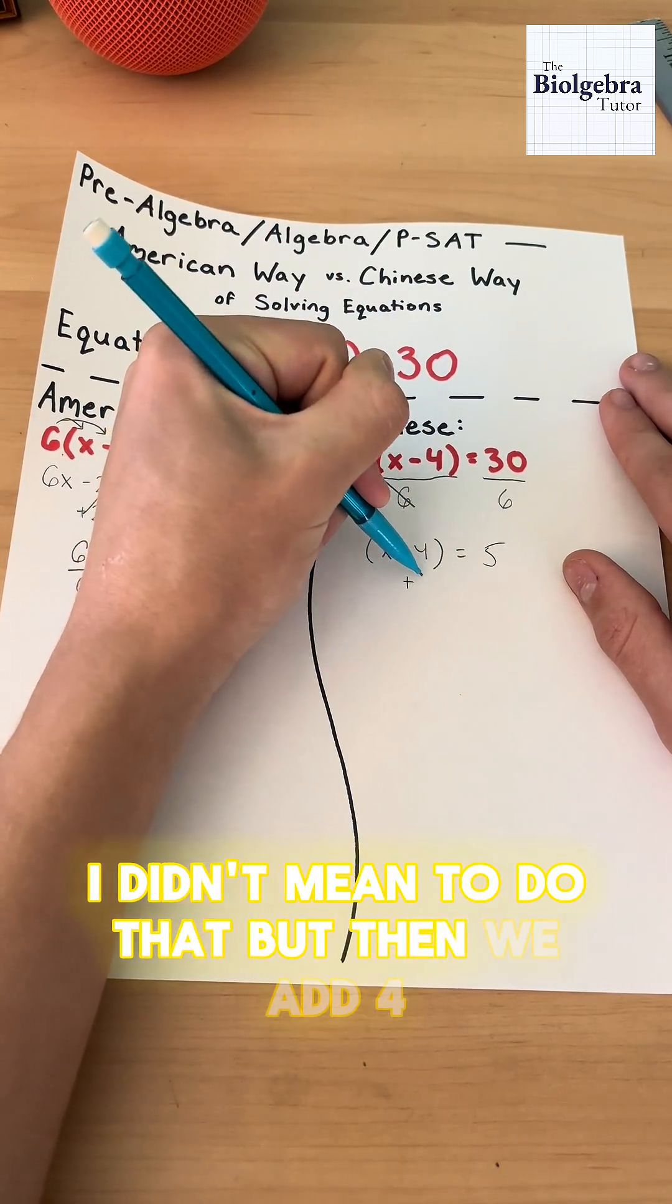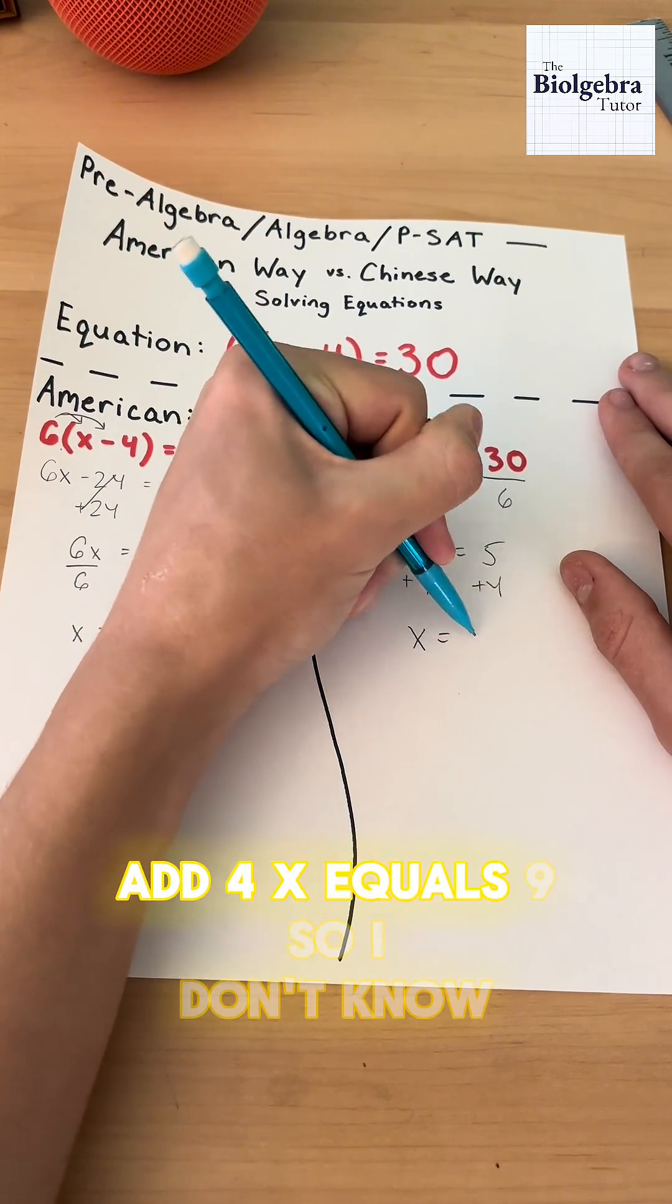And we don't need parentheses. I didn't mean to do that. But then we would add 4. Add 4. x equals 9.